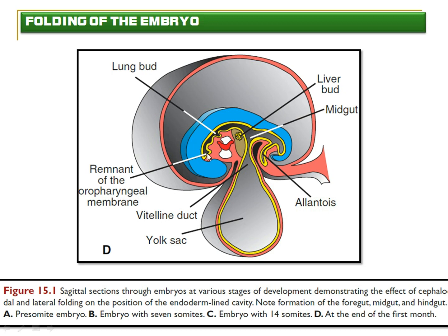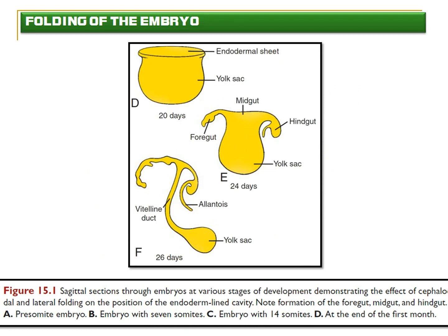This narrow communication between the gut tube and the yolk sac is now called the vitelline duct. The cranial-most part of the gut tube is closed by the oropharyngeal membrane (also called the buccopharyngeal membrane), and the caudal end is closed by the cloacal membrane. These membranes later dissolve to form the future mouth and anal region. The gut tube is divided into foregut, midgut, and hindgut.